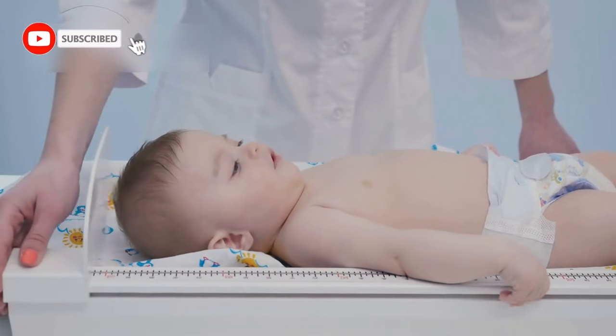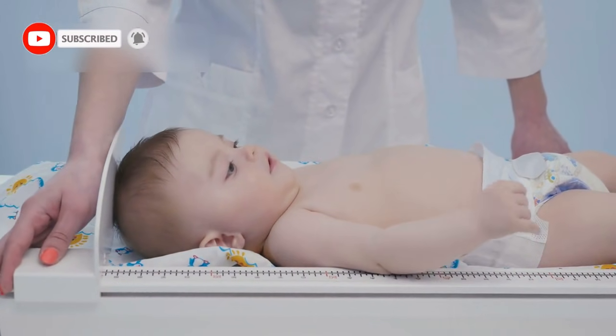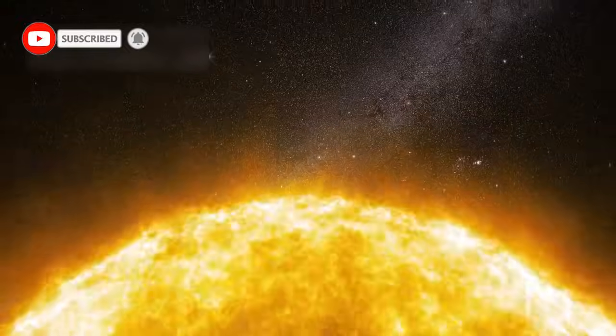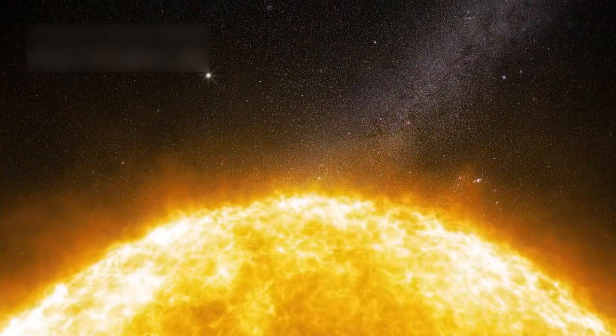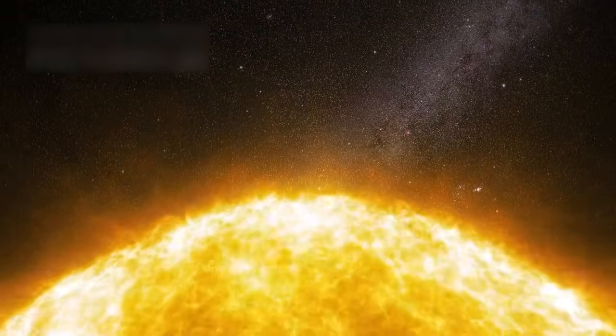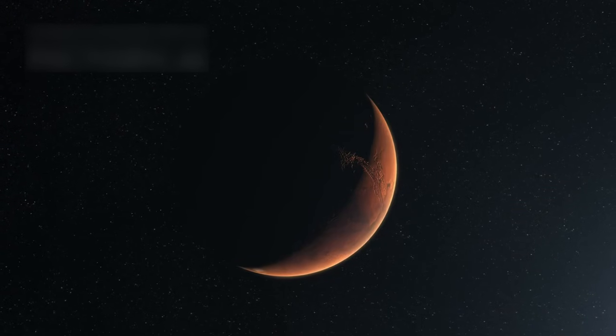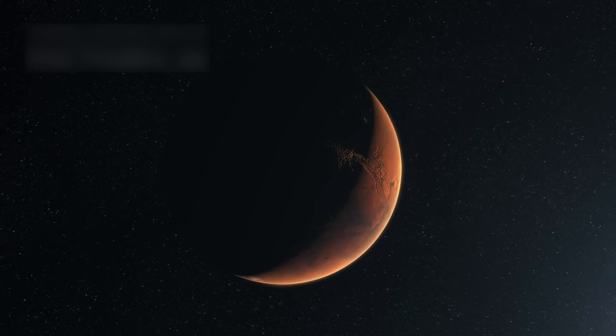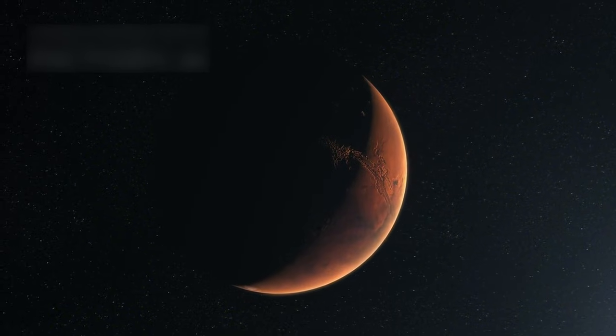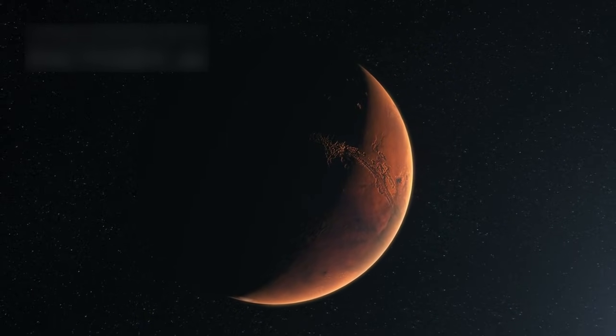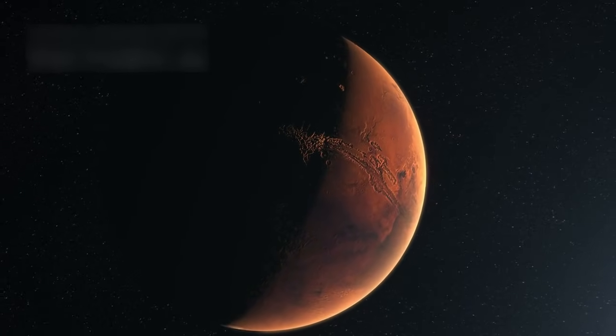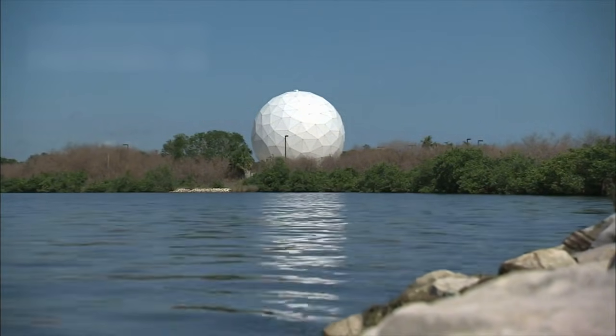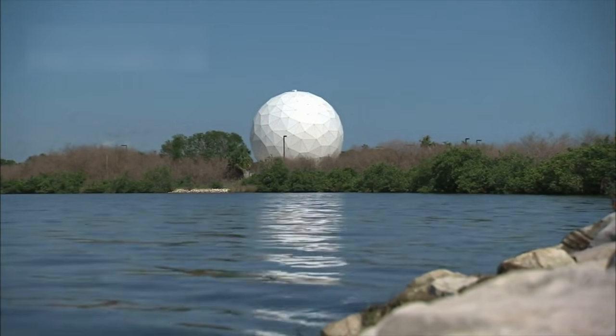The sheer size of Betelgeuse is difficult to comprehend. Scientists estimate that its radius is roughly 700 to 900 times larger than the sun, depending on how its outer layers are measured. If Betelgeuse replaced our sun, its surface would stretch beyond the orbit of Mars, swallowing Mercury, Venus, Earth, and possibly Mars itself. This extreme scale makes it one of the largest known stars visible without a telescope.